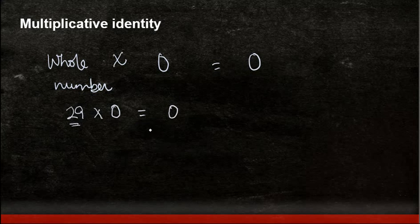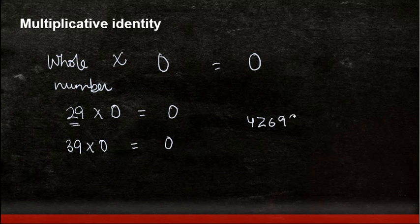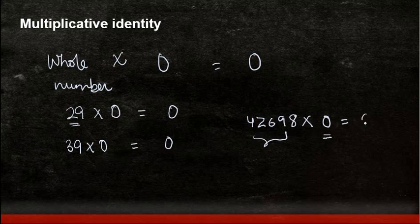Or if I multiply 39 by 0 the answer is 0, or even 42698, any number howsoever large. Whenever we multiply this whole number by 0, the answer is always 0.